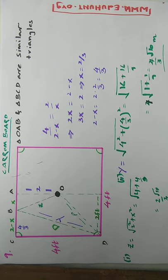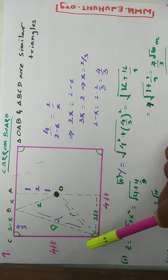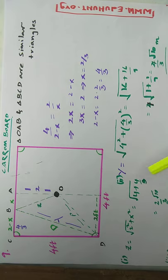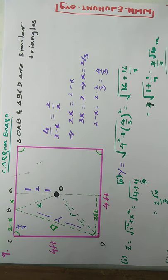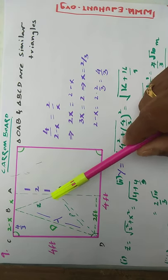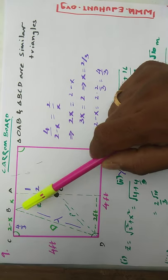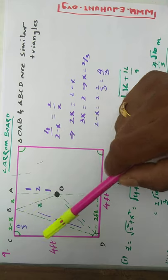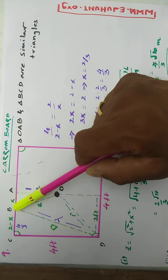This is a carom board problem — a very interesting problem. Let me explain the carom board. It has four holes, and the side length is four feet. Dividing it into two parts gives two feet each, with the center at the midpoint. In this problem, the queen is at O, the striker hits the queen, the queen touches the opposite side of the carom board, and then goes back into the hole.